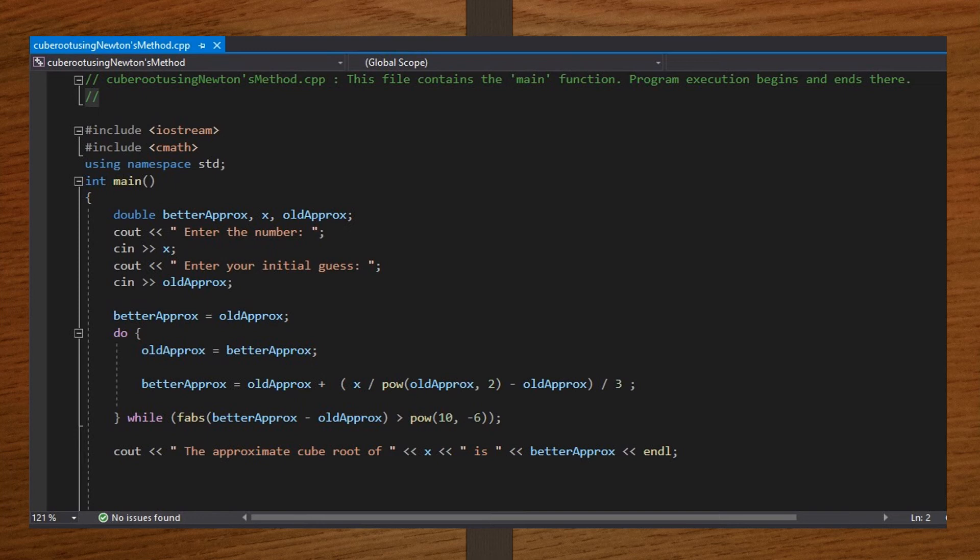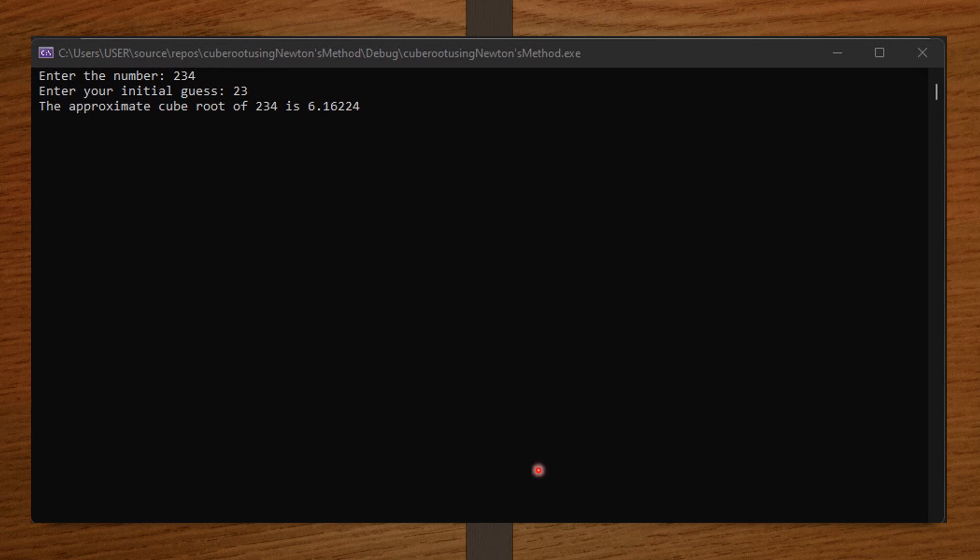Now let's input some values for x and see how our code actually computes for the cube root of x. So I take 2347 and then my initial guess is let's say 23. You can see the approximate cube root of 2347 is 6.16224. So now you can see that even though my initial guess was wrong, Newton's method still computed for the correct answer for the cube root of 2347.